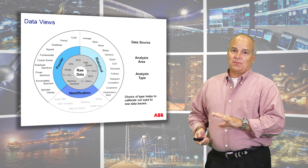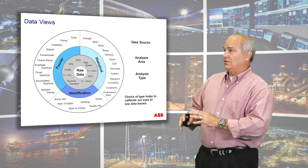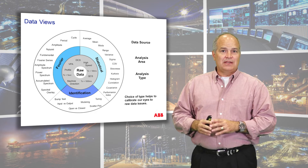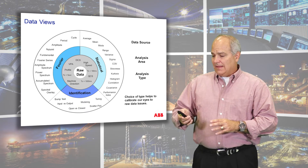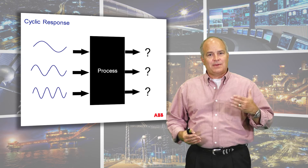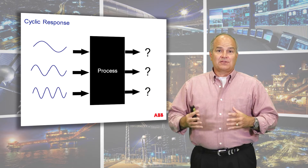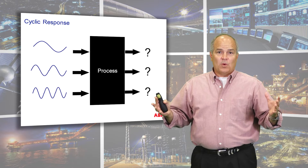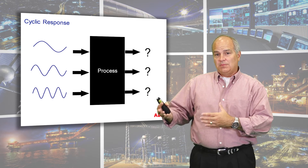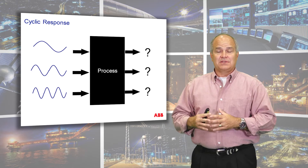Once we get done with part two, down the road we'll do a part three where we get into identification process modeling, which is really closely related to tuning. Now what we're interested in here is a process. We've been talking about a step change, but now we're interested in cycles. Cycles can come from a wide range of rotating devices, control loops, batch processes, and tanks that are oscillating, but they come in different frequencies.